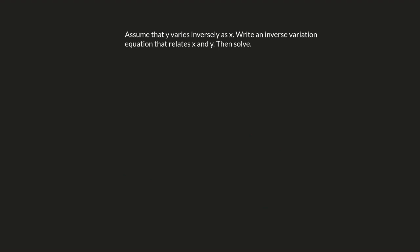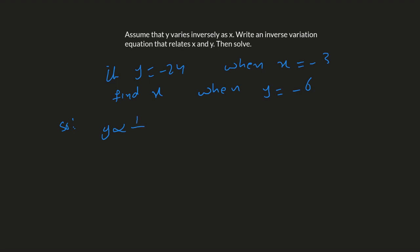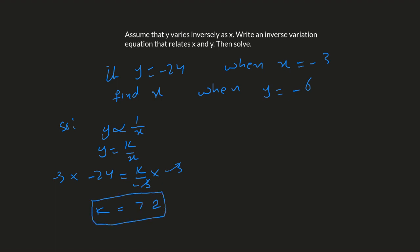Question number 11: if y equals negative 24 when x equals negative 3, we have to find x when y equals negative 6. Same steps — y is inversely proportional to x, so y equals k over x. Plug in y equals negative 24 and x equals negative 3. Multiply negative 3 on both sides: k equals negative 24 times negative 3, which is 72.